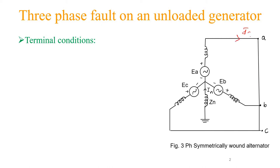So the currents Ia, Ib, and Ic — if you apply KCL at any node, the sum of the entering currents Ia plus Ib plus Ic equals zero, since there is no leaving current and no other path. Let us consider that as the first condition.